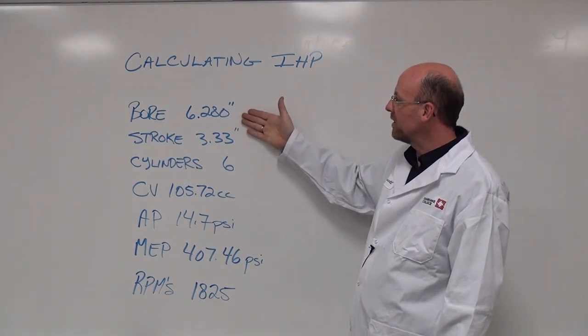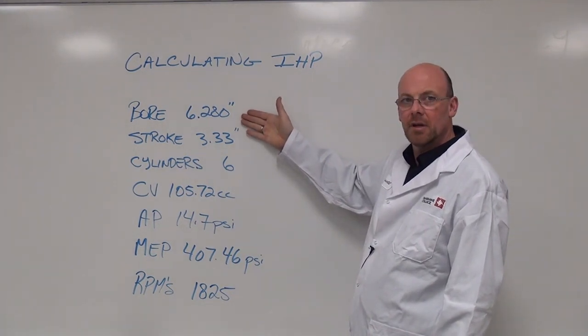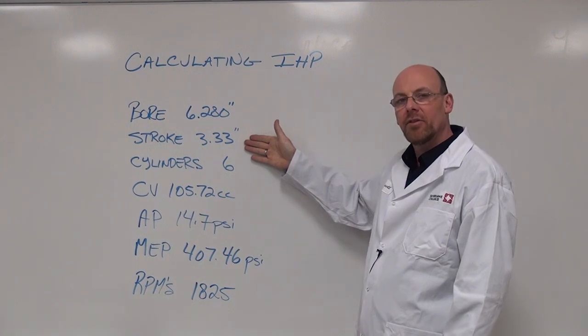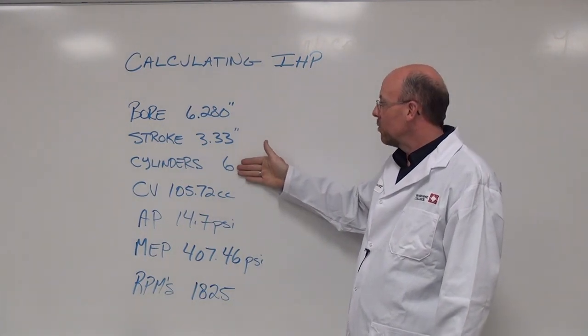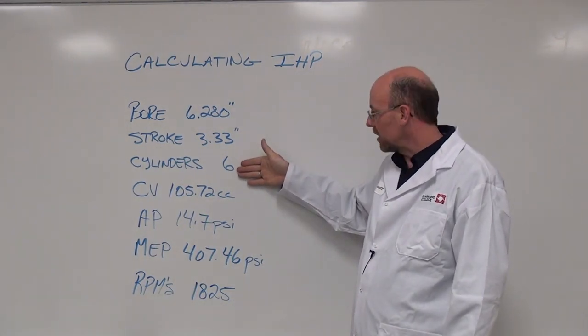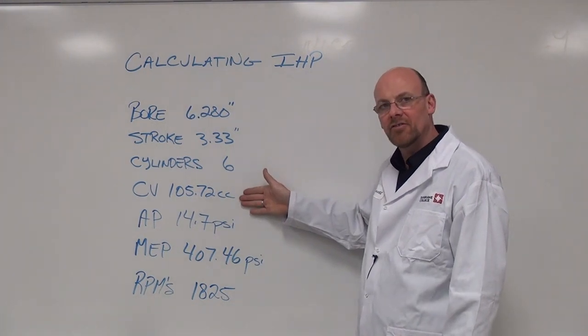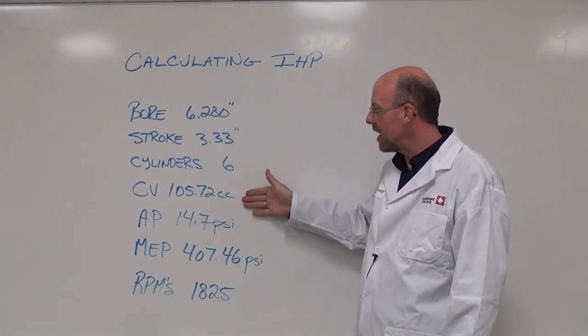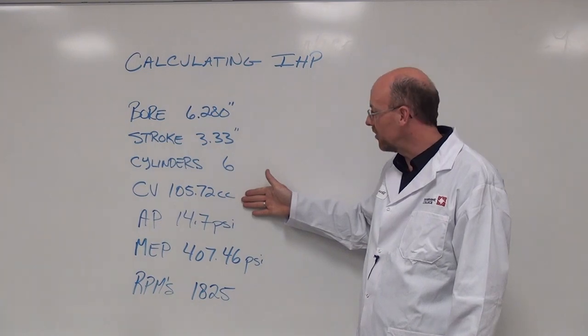Our bore is 6.280 inches, our stroke is 3.33 inches, we have 6 cylinders in application, and the clearance volume established in this engine is 105.72 cc's.